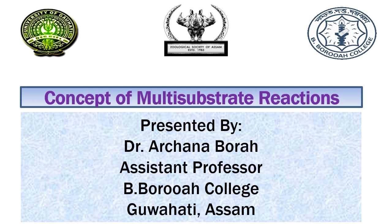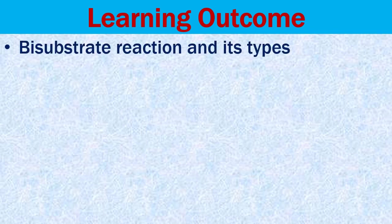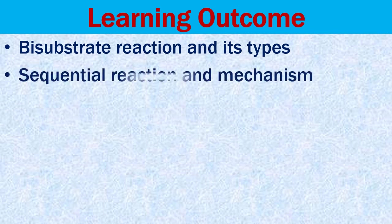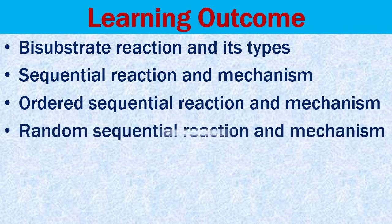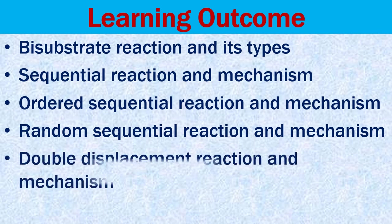The learning outcomes of this module are: the concept of bisubstrate reaction and its types, the concept of sequential reaction and its mechanism, the concept of ordered sequential reaction and its mechanism, the concept of random sequential reaction and its mechanism, and finally the concept of double displacement reaction and its mechanism.